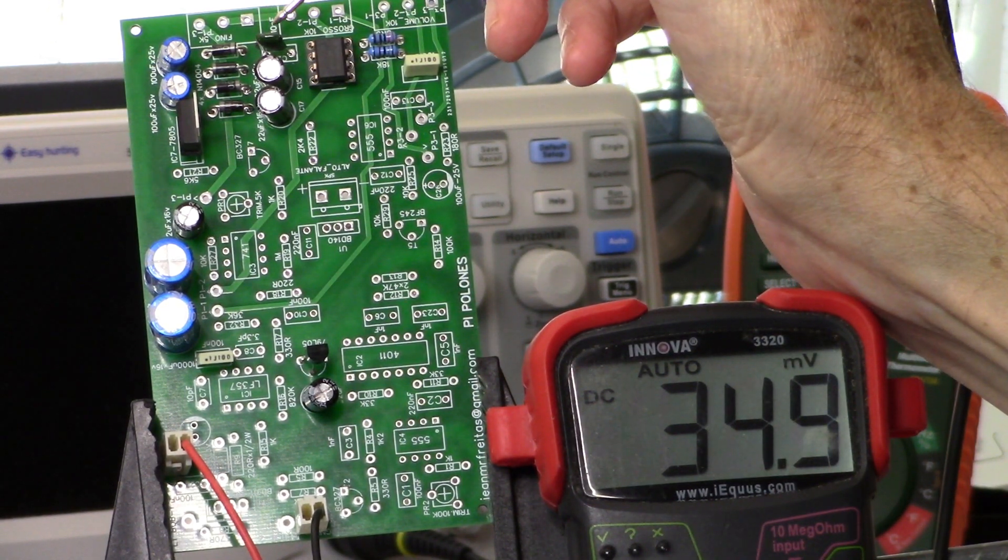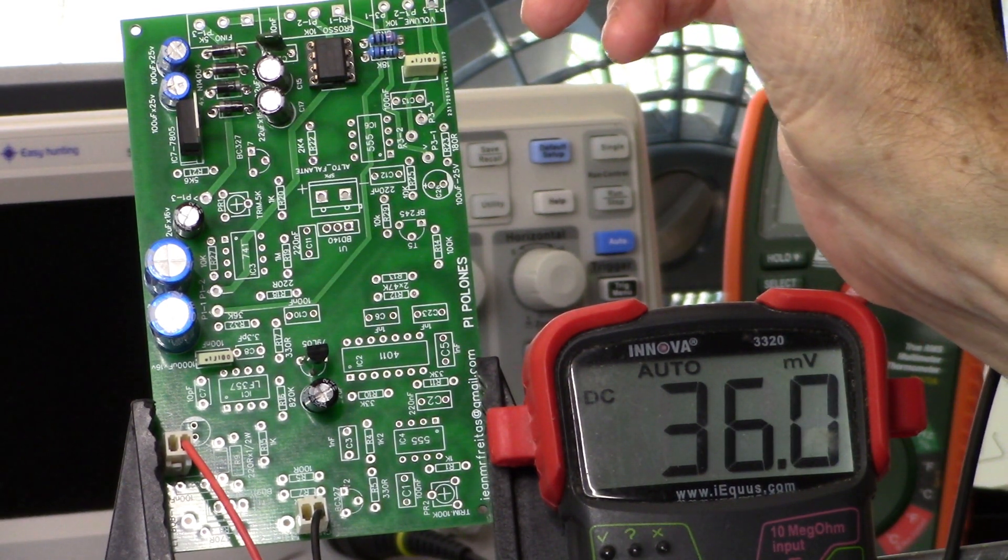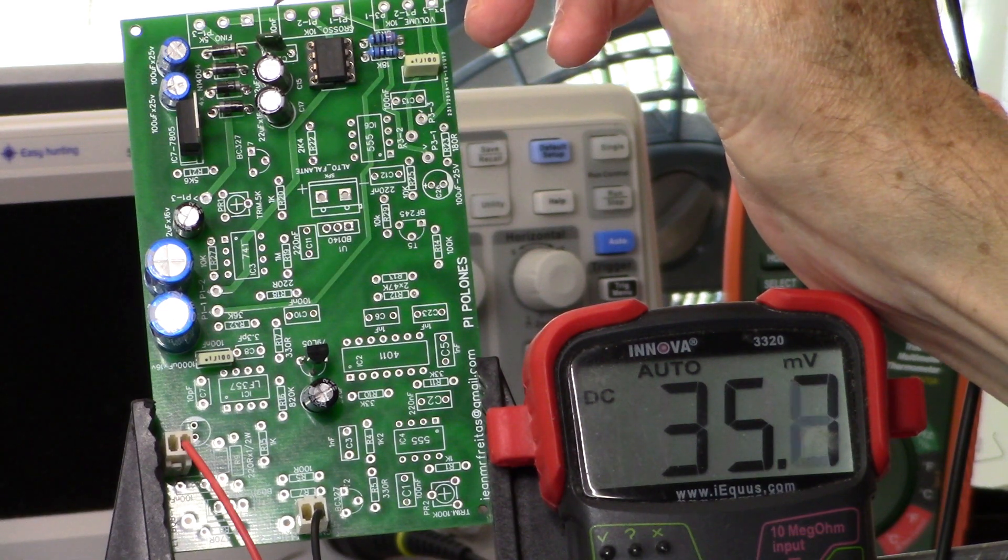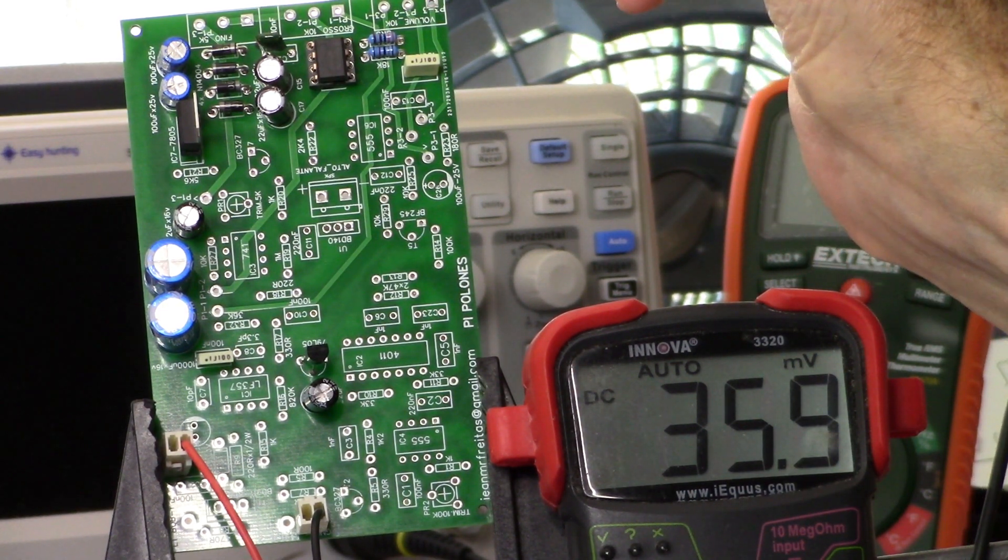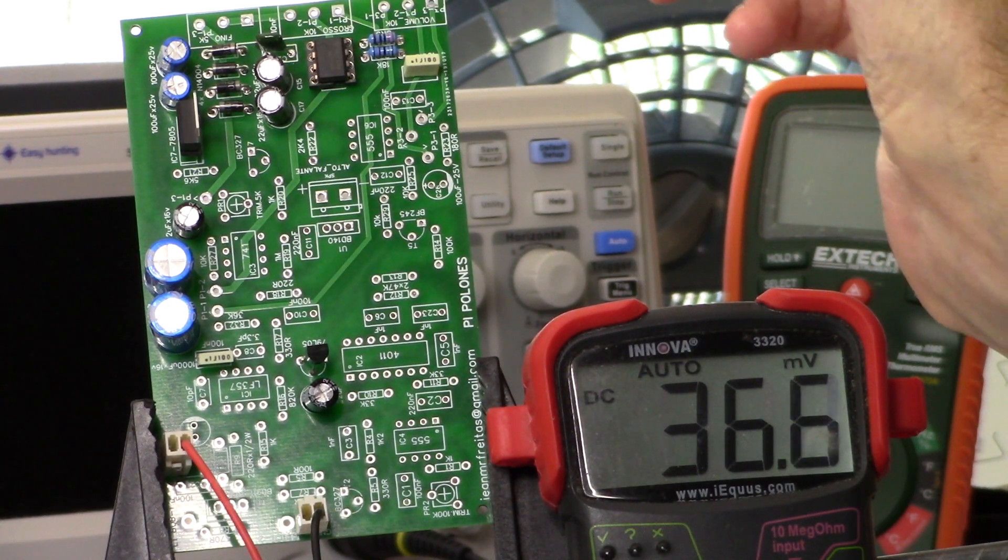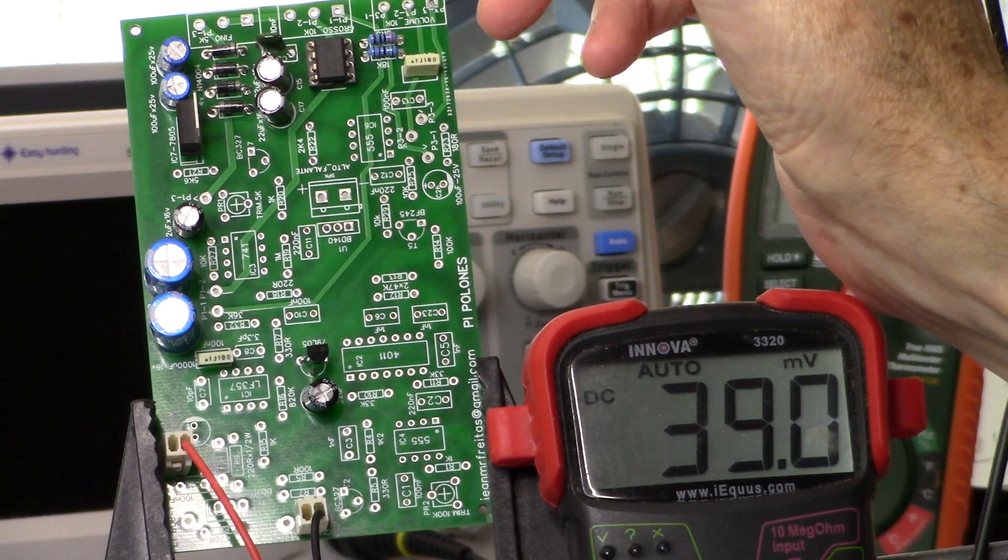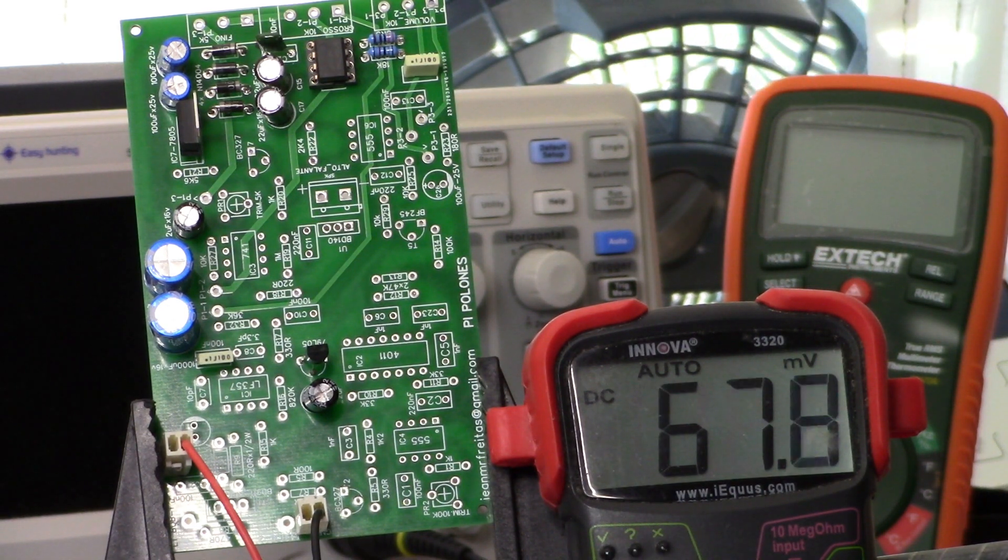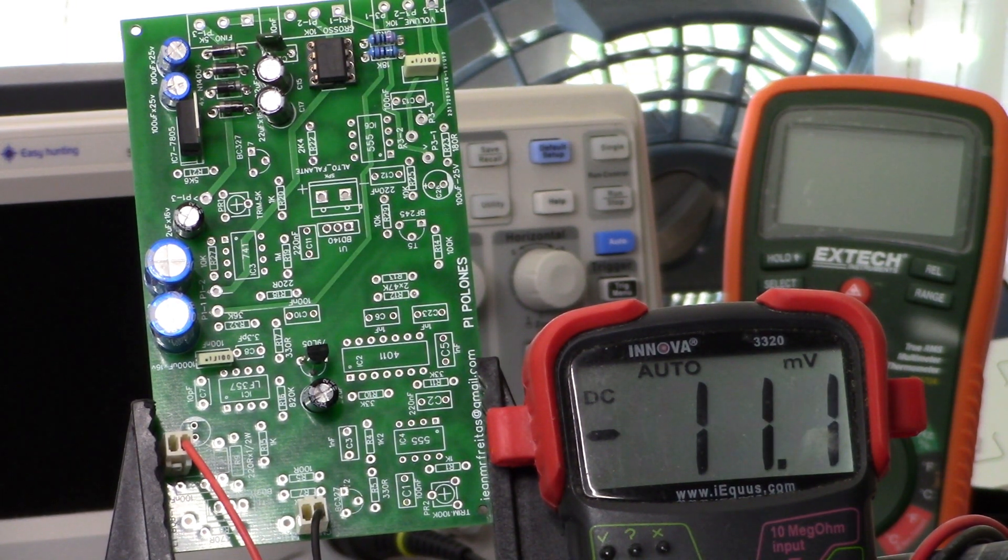One other thing to add is that on this board, capacitor C21 here, one of the legs wasn't joined to anything. It has the through holes in it, but you need to scratch off back to the ground plane on the rear of the board and just attach one of the legs over the ground. So that was an error in the design and fabrication of the board.